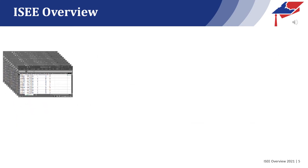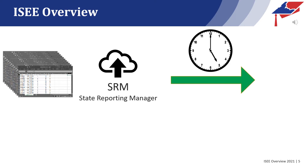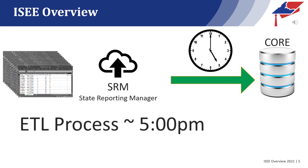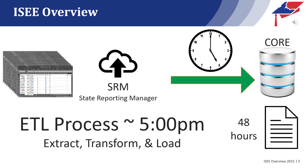These CSV files are uploaded into SRM, or the State Reporting Manager. At roughly 5pm each evening, the submissions loaded in SRM are processed into the state core database. This is called the ETL process, or Extract, Transform, and Load. Typically, you can see the result of your loaded data in the state reports the next morning, but it may take up to 48 hours to populate or update these reports if there are any errors that halted the ETL process.